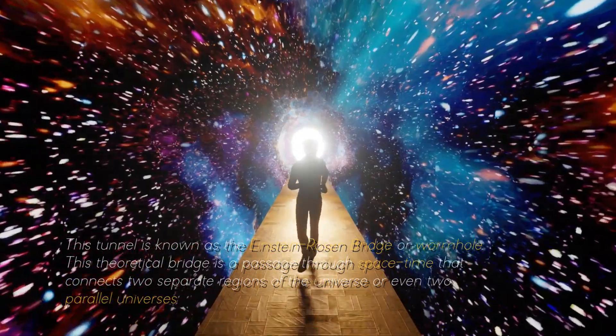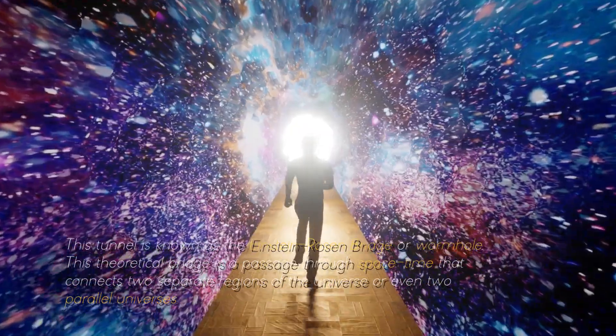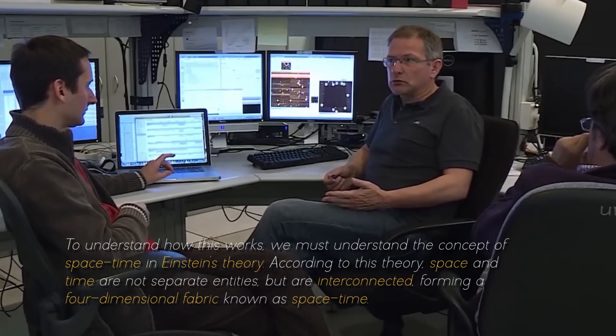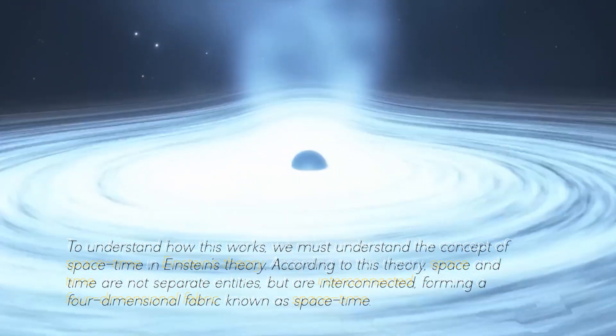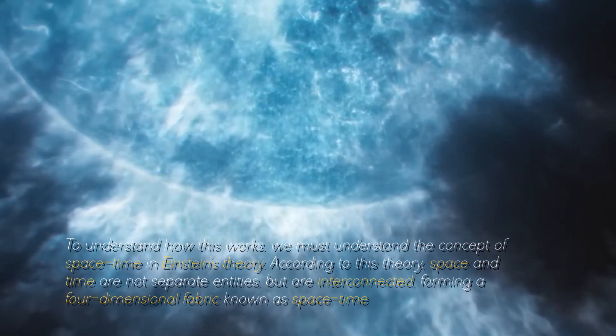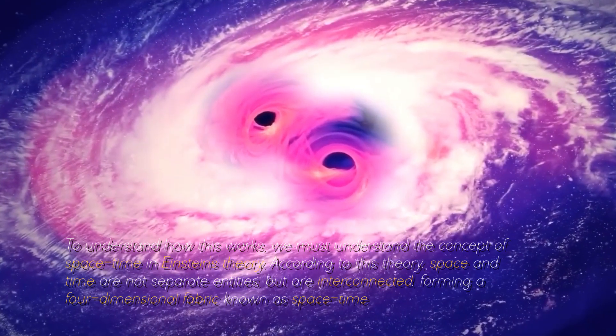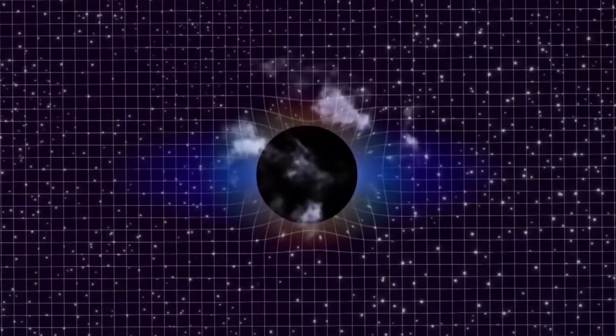This theoretical bridge is a passage through space-time that connects two separate regions of the universe or even two parallel universes. To understand how this works, we must understand the concept of space-time in Einstein's theory. According to this theory, space and time are not separate entities, but are connected, forming a four-dimensional fabric known as space-time. Objects with mass warp space-time, creating a gravitational field that affects the motion of other objects.